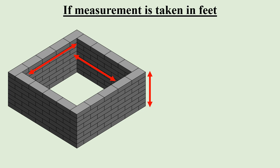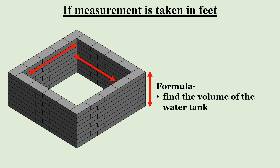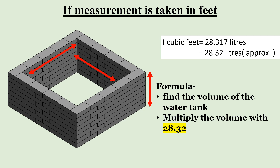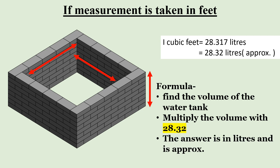First, find the volume of the cuboidal tank: length into breadth into height. Second step is to multiply the volume by 28.32. We choose this number because one cubic foot equals 28.32 liters. Your answer will now be in liters.